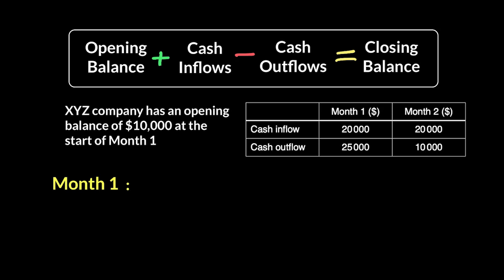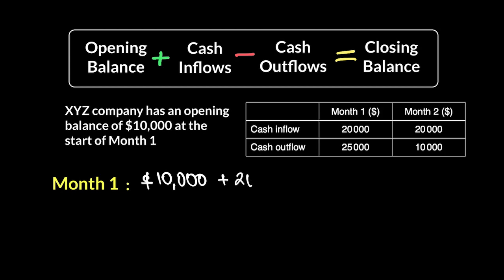Remember, each period is first treated separately and then you move on to the next one — meaning you first complete the entire formula for month one. So let's calculate the closing balance for month one. We have our opening balance of month one at $10,000, cash inflows for that month were $20,000, and the outflows were more than the inflows at $25,000. So I've got 30 minus 25 — a positive cash flow of $5,000 at the end of month one.